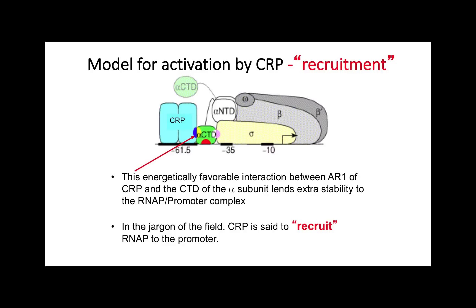The experiments described in this video support a recruitment model in which an energetically favorable contact between AR1 of CRP and the CTD of the RNA polymerase alpha subunit activates the lac promoter by increasing the affinity of RNA polymerase for the promoter. However, while these experiments are consistent with this model, they fall short of actually proving it. So I'll leave you with the following question: what additional experiments are needed to prove the recruitment model?